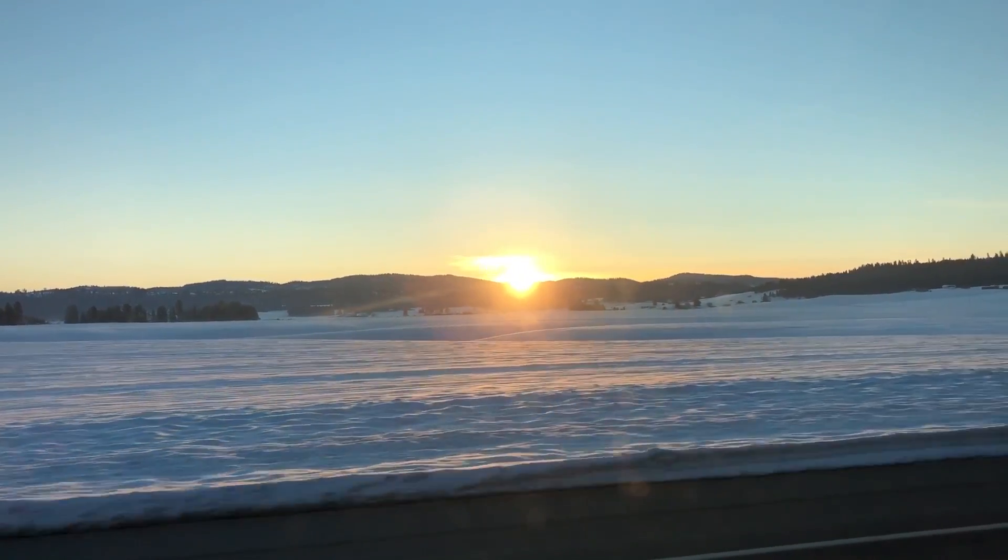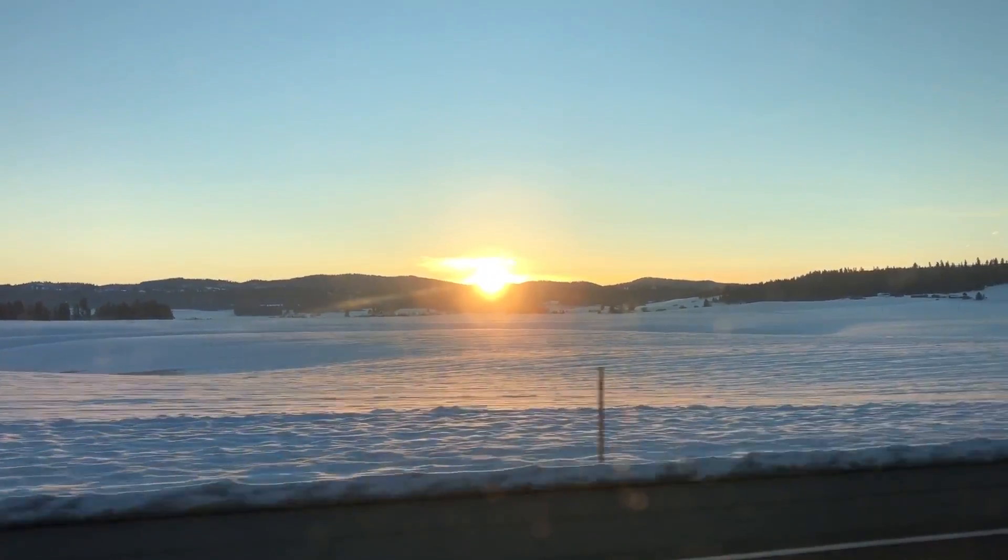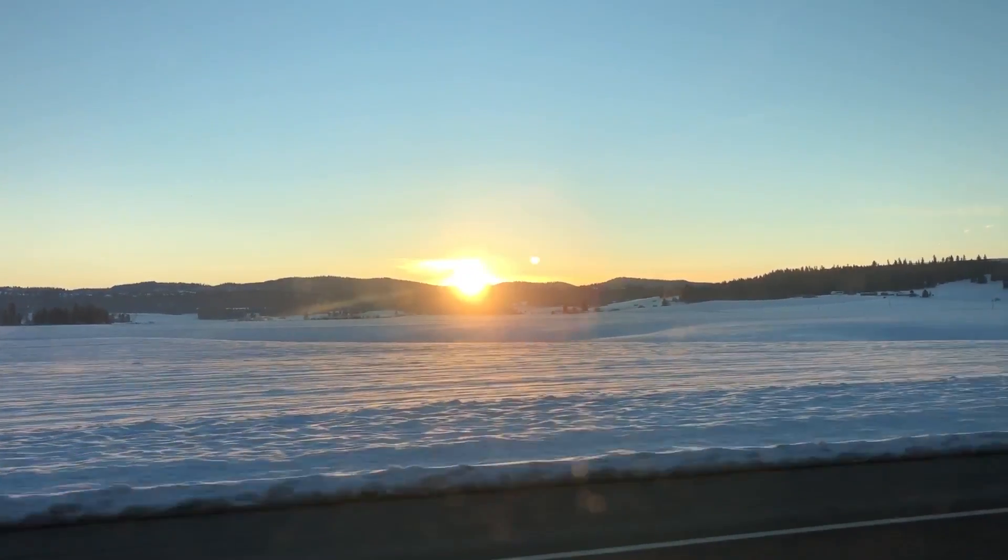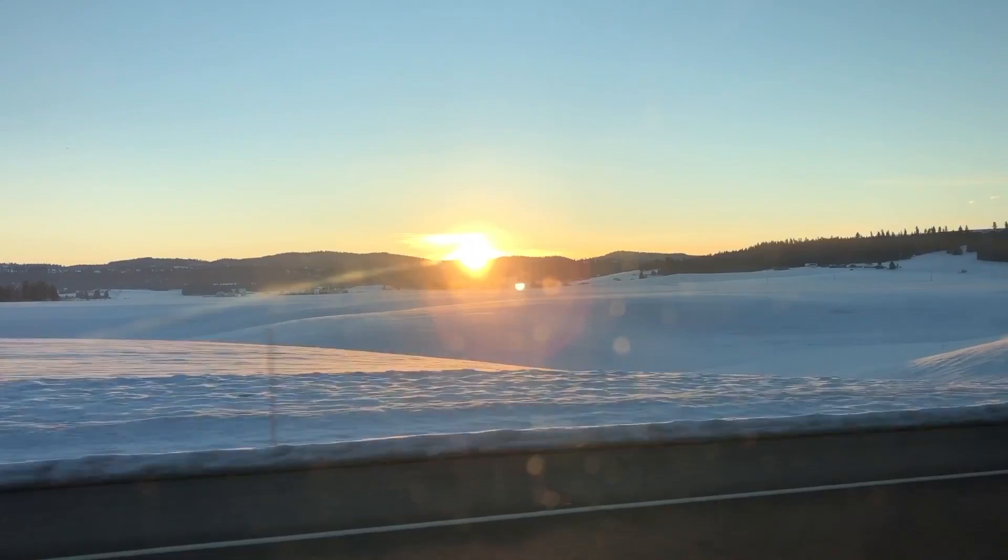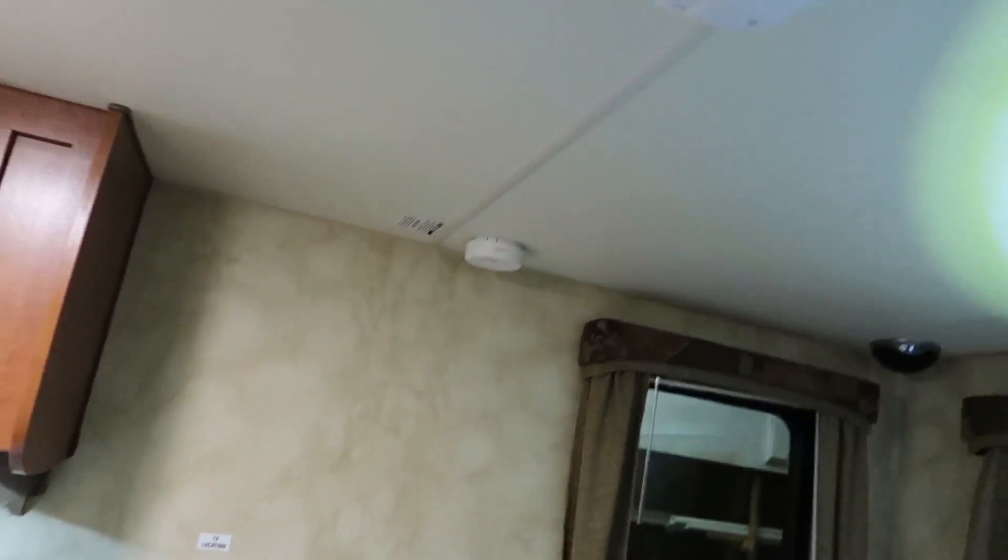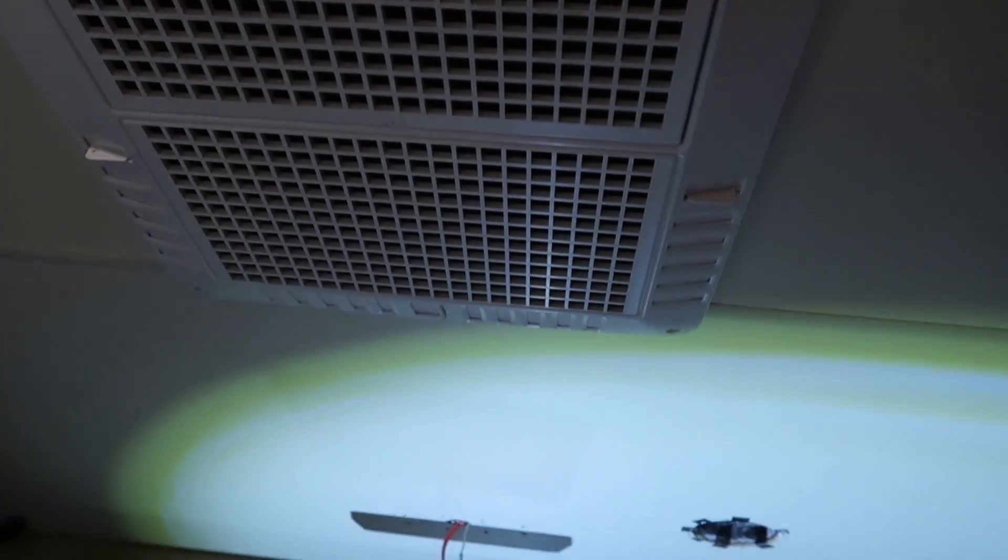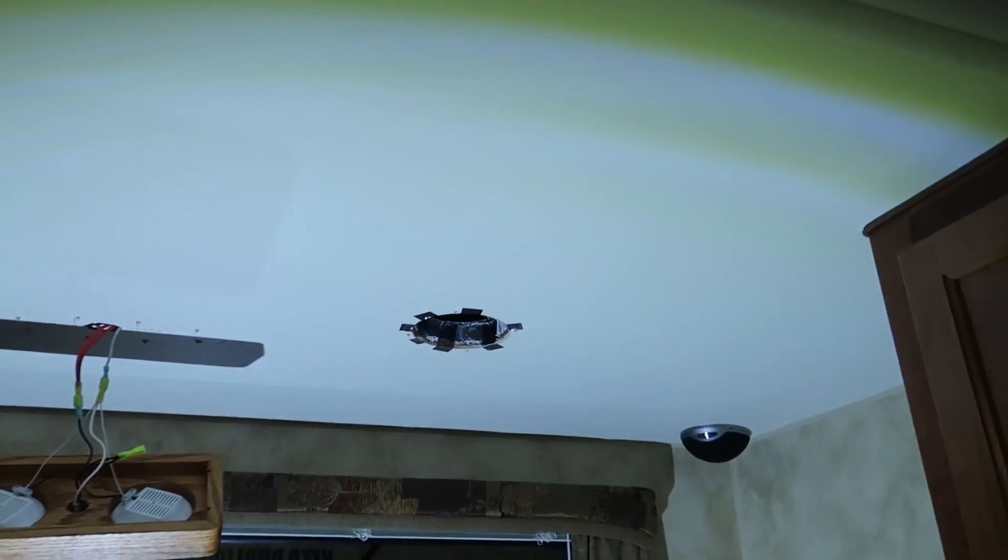Welcome back. Here we are for another episode of Doug's RV Improvements. So this is my Nash 17K. It has a ducted air conditioning system. What that means is the air doesn't actually blow out through this vent. It's ducted through the ceiling.